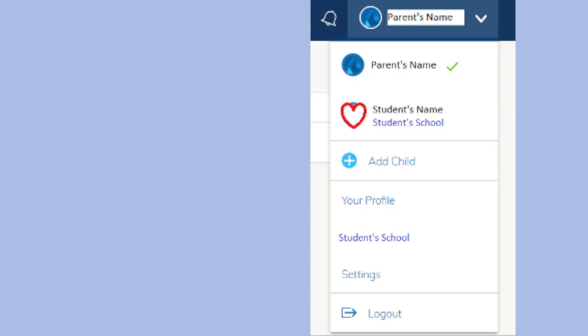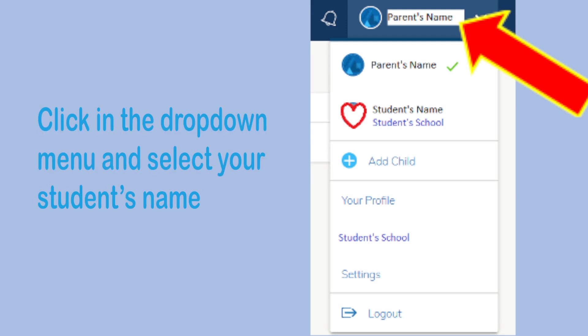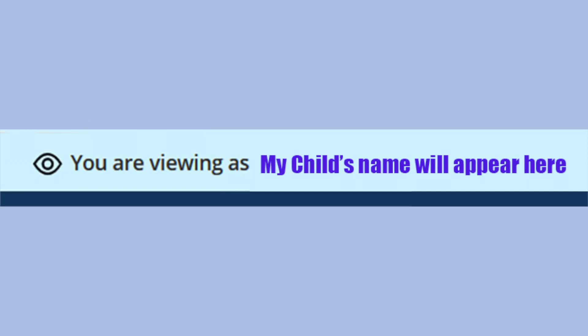In Schoology, to switch between Parent and Student View, click on the upper right corner of the Schoology page where your name is displayed. A drop-down menu will appear. Select your student's name to see the assignments and conversations your student sees. You will know that you are viewing as your child because the top of the screen will indicate that you are viewing as your child's name.